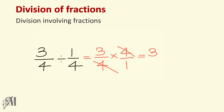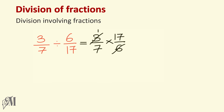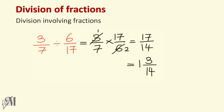Three over seven divided by six over seventeen: write three over seven as it is, and write the reciprocal seventeen over six. Three and six can be cancelled by three, giving one and two respectively. So our answer is seventeen over fourteen. Since this is an improper fraction, we convert it into a mixed number — the answer becomes one and three over fourteen.